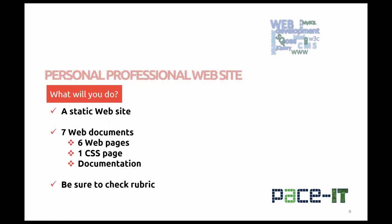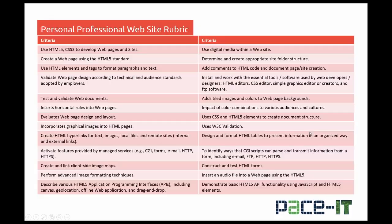The personal professional website allows you to create a website that can be used as the beginning of a portfolio. You'll be creating a static website. It has within it seven documents — six of those documents are web pages, there is one CSS page, and you're also expected to document the website. Be sure to look at the rubric on the assignment and make sure that you're meeting all of those criteria. There are 26 different items within the rubric. You can see them all here, so as you read through the rubric on the assignment, make sure you check off that you've hit all of these things.